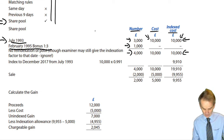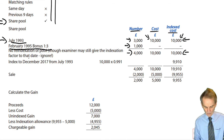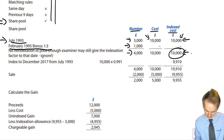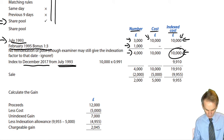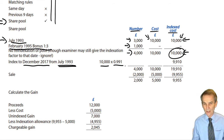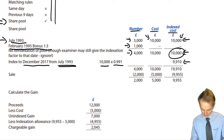Even though the examiner will very likely give you an indexation factor from July 1993 through to February 1995 — that's enough rope by which to hang yourself — don't use it. No re-indexation to the bonus issue date. We are therefore going to re-index that index cost total through to December 2017, the last date at which re-indexation takes place, and that will occur from the date of the original acquisition, July 1993. The examiner provides the indexation factor; you just pick the correct one and apply it.